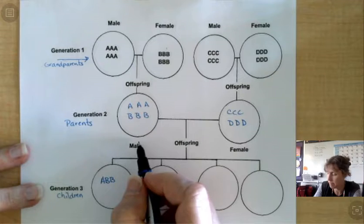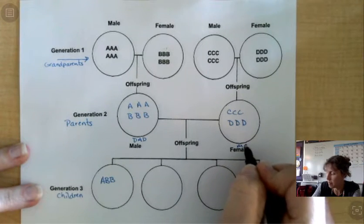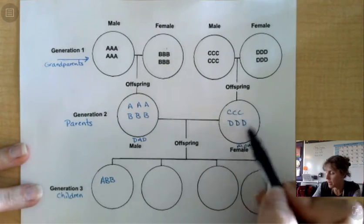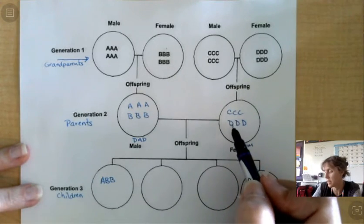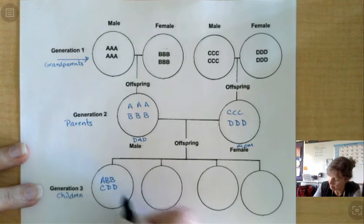So that comes from the dad, right? This is the dad. And this is the Mom. And so from the Mom, I have to take three. So I'll take C and D and D.